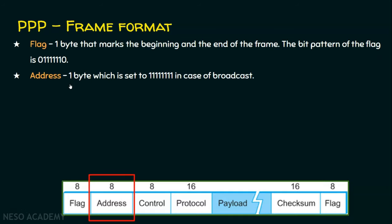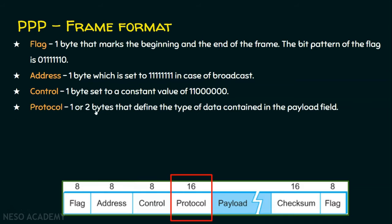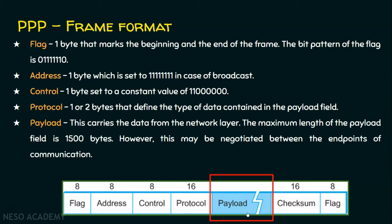The address field is one byte and is normally set to all ones in the case of broadcast. The control field is also one byte, set to a constant value of two ones followed by six zeros. The protocol field is very unique to PPP — it can be one or two bytes, that is 8 or 16 bits — and it defines the type of data contained in the payload field. This tells the receiver what type of protocol is used, and it is a new field introduced in the PPP format. The payload is a variable-length field that carries data from the network layer.